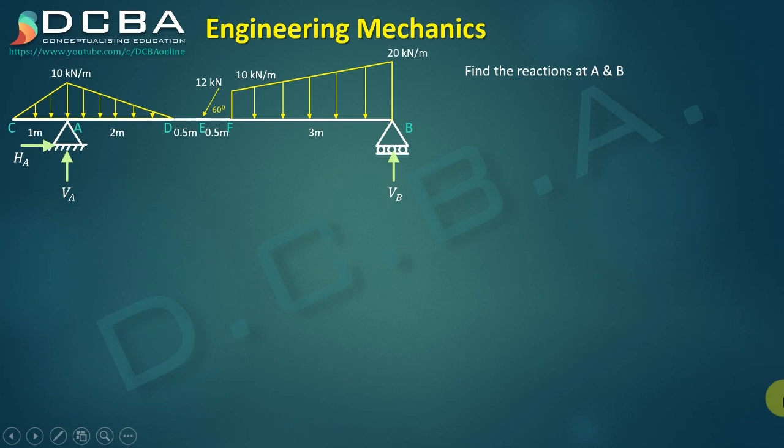Support A is a hinge support, so we have two reactions: a vertical reaction VA and a horizontal reaction HA. Similarly, at point B we have one reaction because it is a roller — a roller gives only one reaction normal to the direction of the rollers.